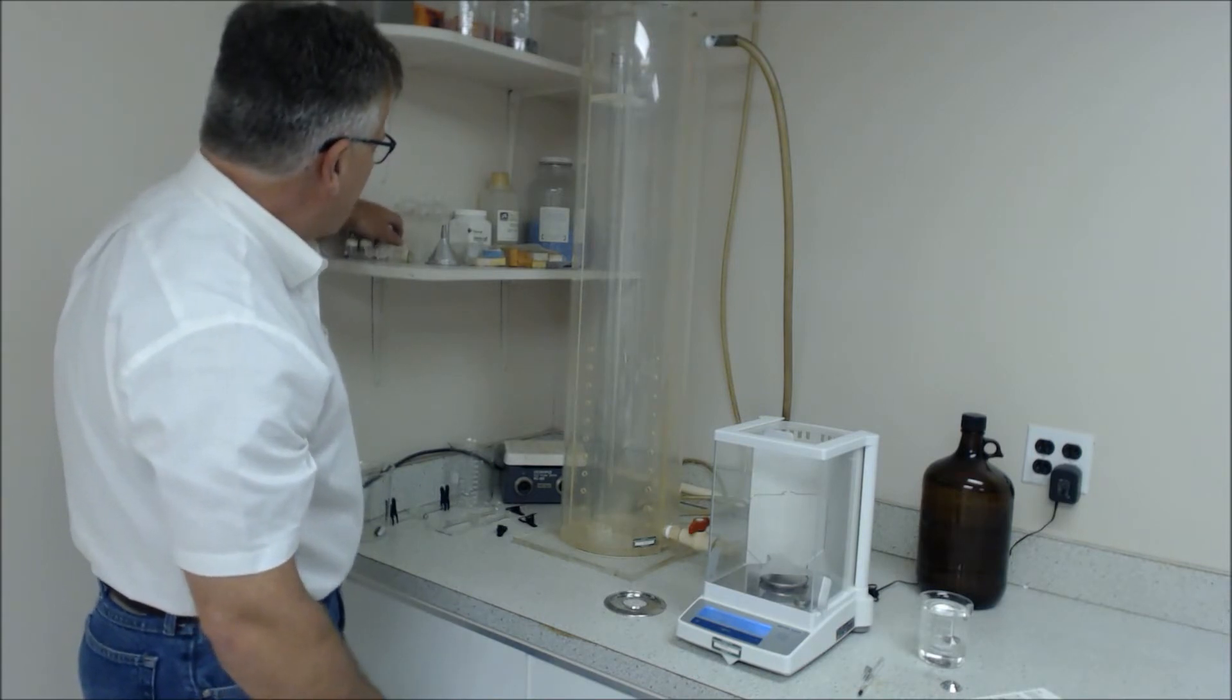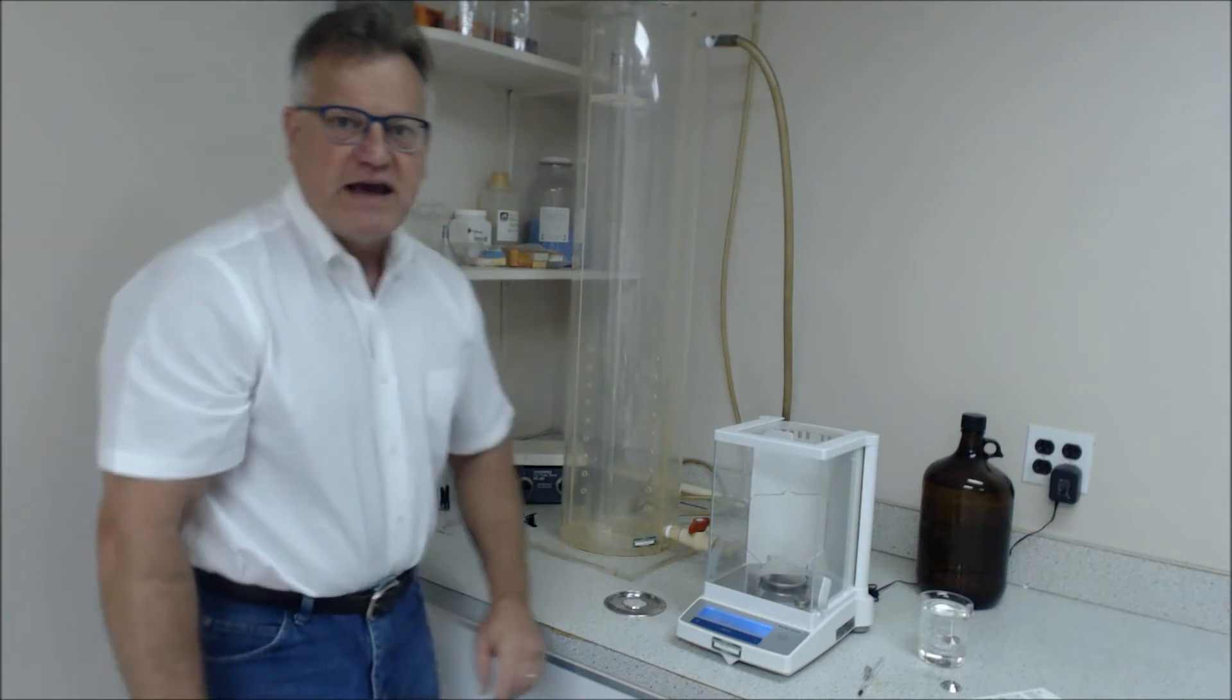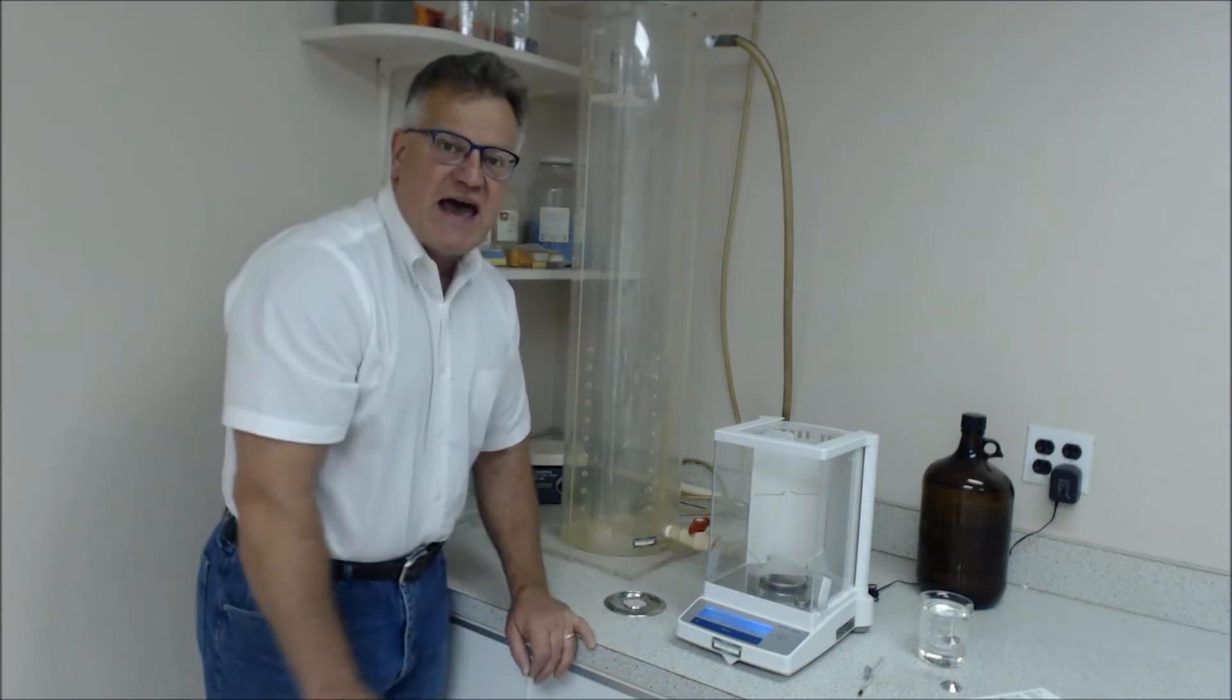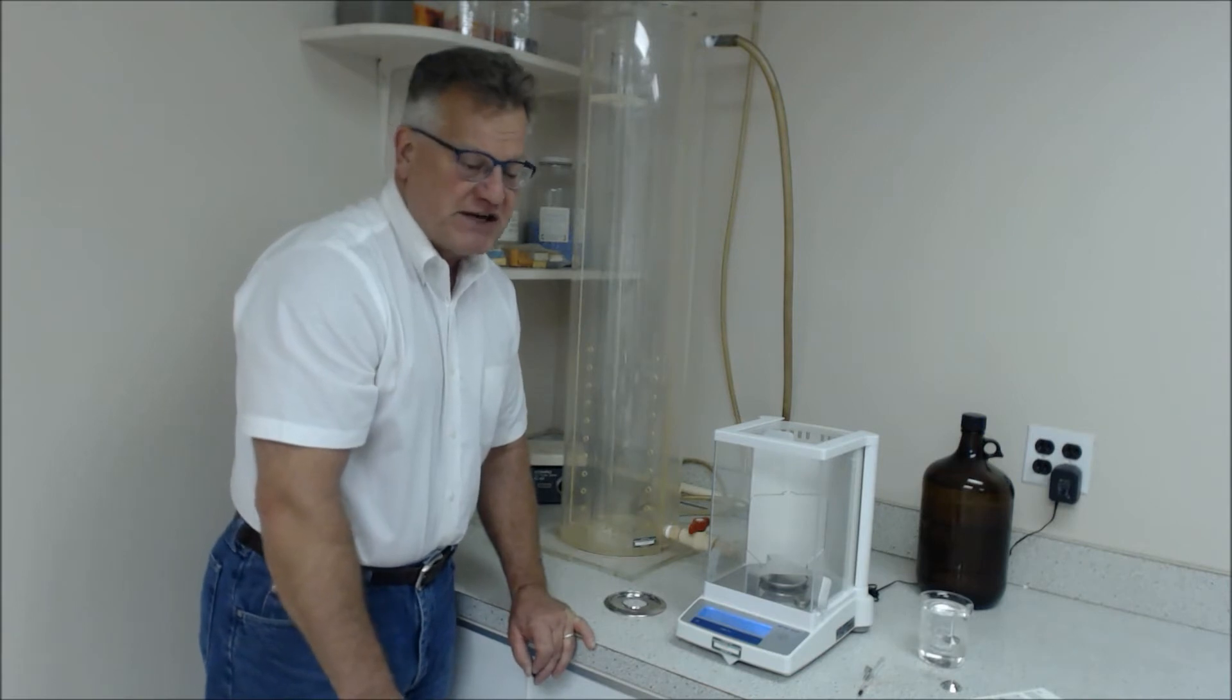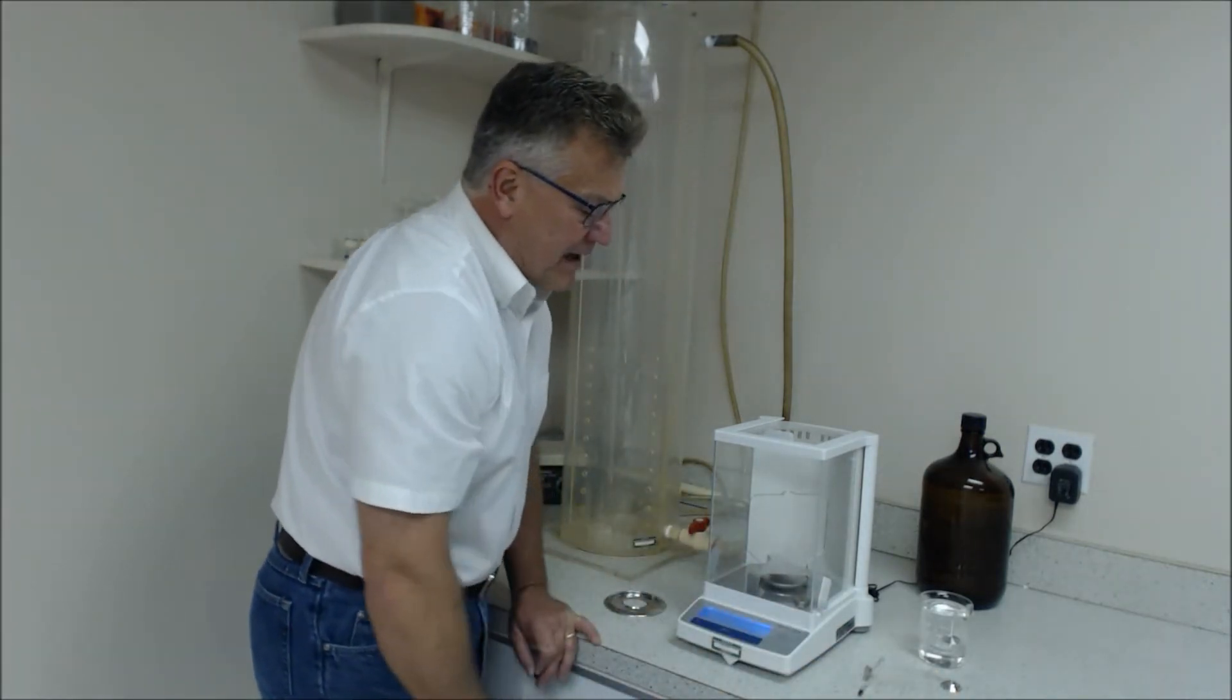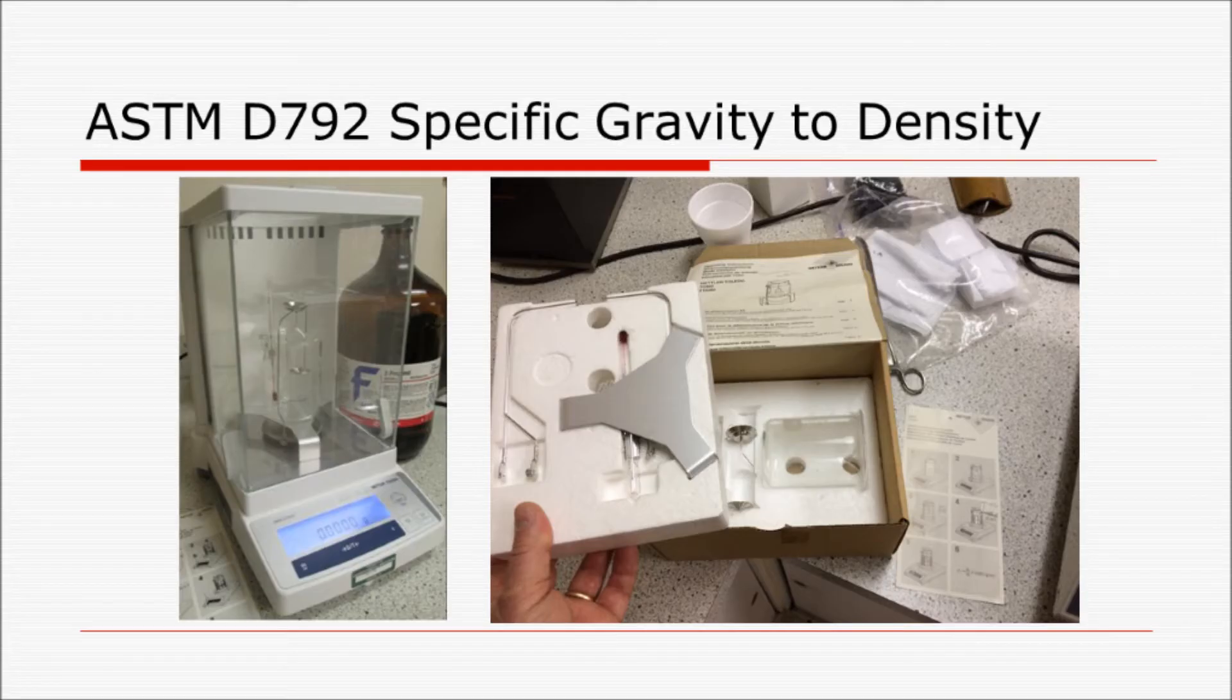Typically what we do, however, is run a specific gravity test, and that specific gravity test is run off of an analytic balance, which is here. This happens to be a Mettler balance, analytic balance, and it has the specific gravity kit associated with it. That kit is a hanger.